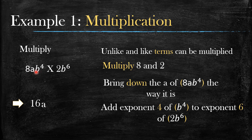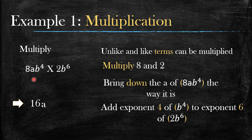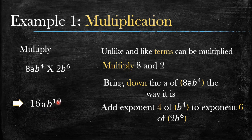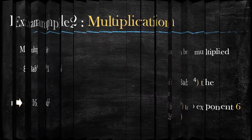Remember: for numbers we multiply them, but for letters we look for like bases. If there's a matching base on the other side, we add the exponents because it's multiplication. So 4 plus 6 gives us b to the power 10. That is your final answer.